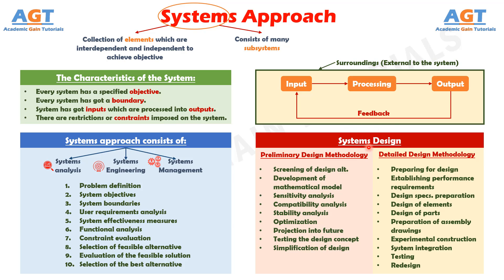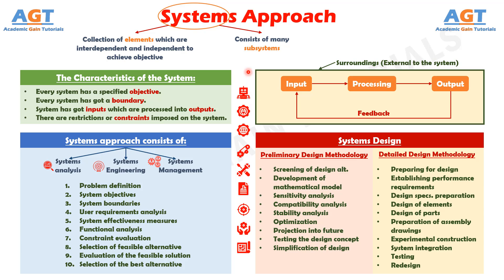The major strength of the systems approach is that all the factors that influence the system throughout its life from the conception stage are considered. Industrial engineering relies heavily on the systems approach in solving problems. Instead of analyzing the problem in isolation at the elemental or subsystem level, an integrated view is considered, keeping in mind the constraints from both inside and outside the system. This holistic approach helps achieve system optimization rather than sub-optimization.